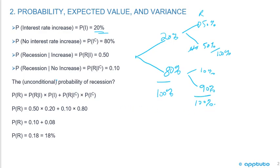So they're saying what is the unconditional probability of the recession? The way that we're going to get that is 20% times 50%. That's going to give us 0.1 because there's the recession here. If the rates go up, 50% probability. And if the rates go down, there's a 10% probability of recession.